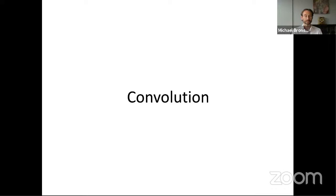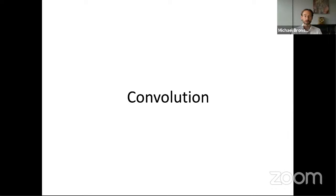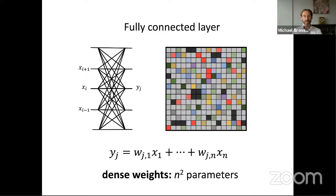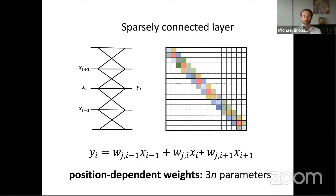Let's start with convolution. To understand what convolution is in the classical setting, let's take a step back and look at convolution on grids in the Euclidean setting. In a fully connected perceptron layer, one output depends on all the inputs — the matrix of weights is dense with n-squared parameters. We can make this matrix sparse by connecting one output to just a fixed number of inputs, giving a multi-diagonal matrix with linear parameters. In convolutional neural networks, all these parameters are shared, so the number of parameters is fixed and independent of the image size.